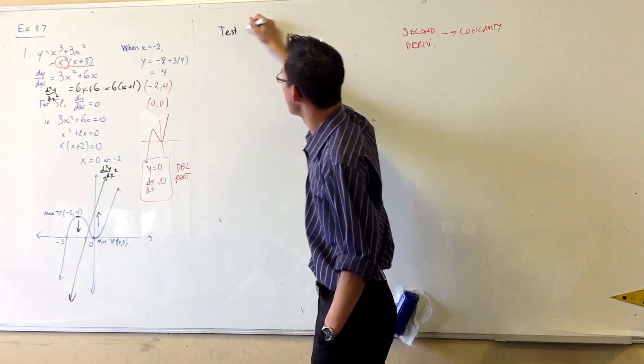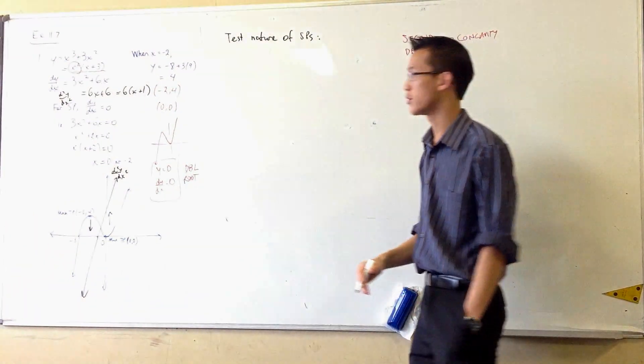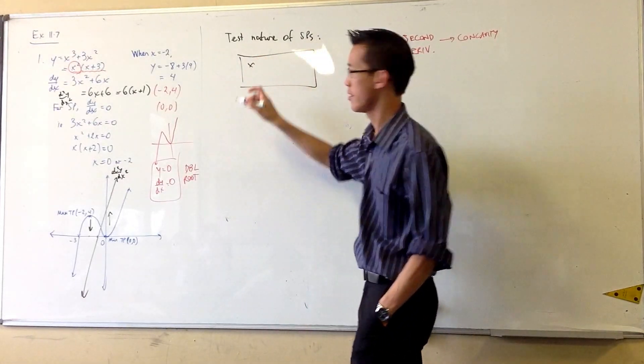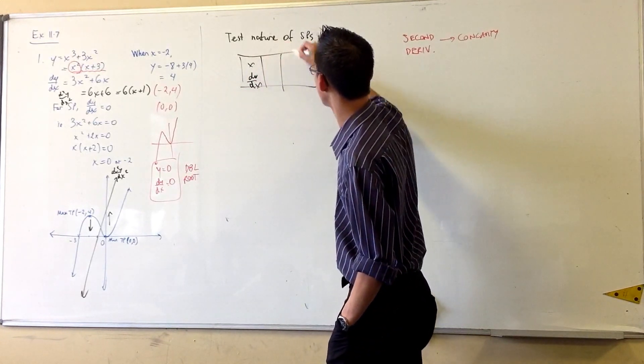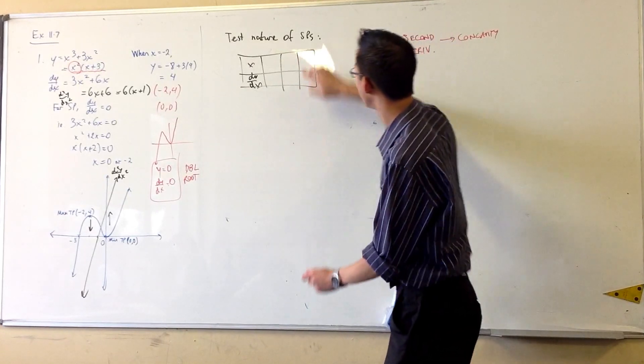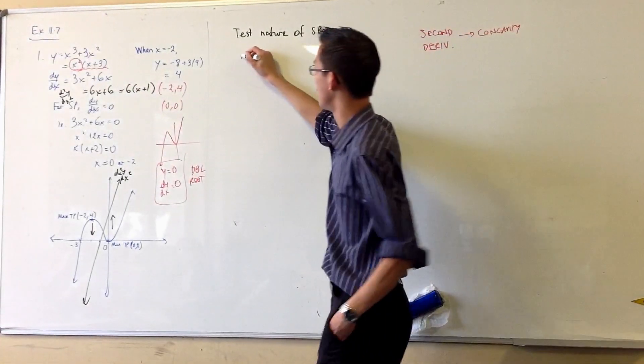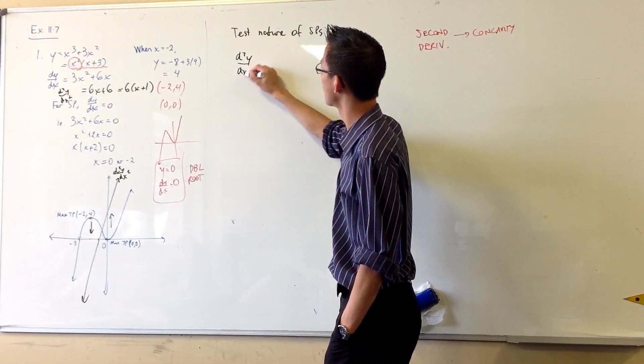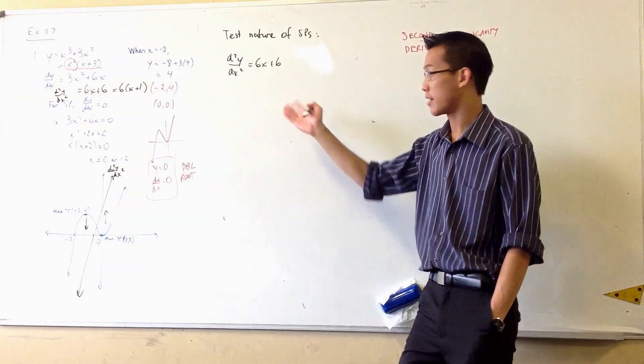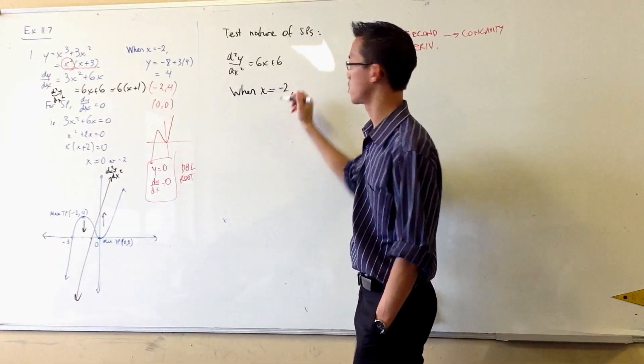I want to test the nature of my stationary points. So here's the way I'm going to do it. Instead of saying here's a table, x and dy/dx, and then testing the stationary point on either side, here's what I'll do instead. I'm going to get my second derivative out, which is 6x plus 6. And I want to think about what it's equal to at both of these points. So you write down when x equals minus 2.